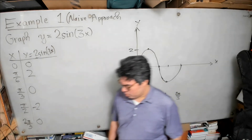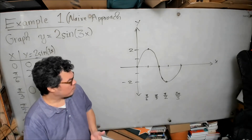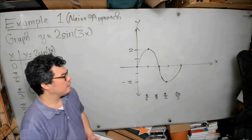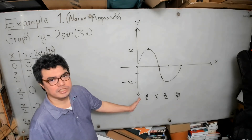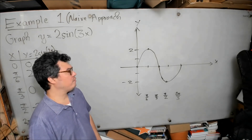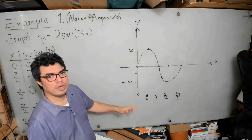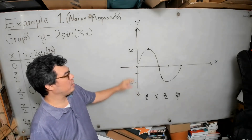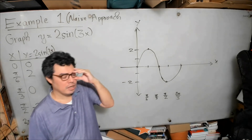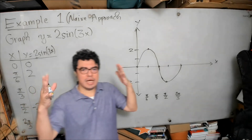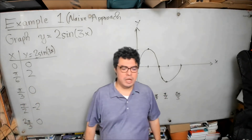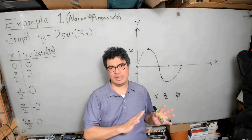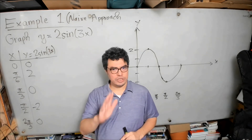This graph has no vertical shift — it's symmetric about the x-axis. It also has no phase shift because it starts at x=0. A dead giveaway of a vertical shift would be if the maximum and minimum were not equal in magnitude. All the additional details about amplitude, period, phase shift, and vertical shift we'll cover in much more detail later.